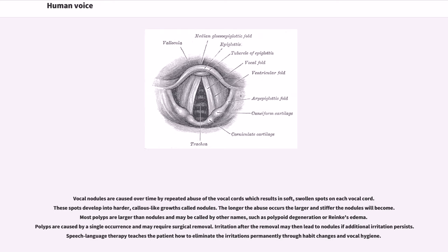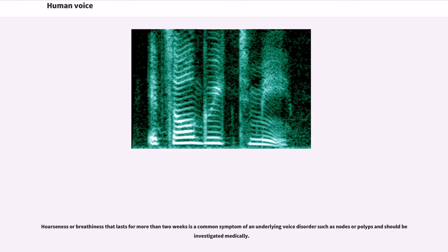Vocal nodules are caused over time by repeated abuse of the vocal cords which results in soft, swollen spots on each vocal cord. These spots develop into harder, callus-like growths called nodules. The longer the abuse occurs, the larger and stiffer the nodules will become. Most polyps are larger than nodules and may be called by other names, such as polypoid degeneration or Reinke's edema. Polyps are caused by a single occurrence and may require surgical removal. Irritation after the removal may then lead to nodules if additional irritation persists. Speech-language therapy teaches the patient how to eliminate the irritations permanently through habit changes and vocal hygiene. Hoarseness or breathiness that lasts for more than two weeks is a common symptom of an underlying voice disorder such as nodules or polyps and should be investigated medically.